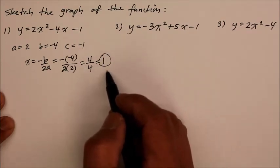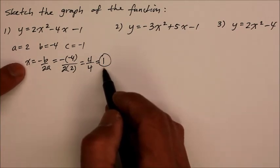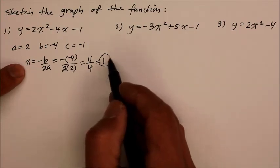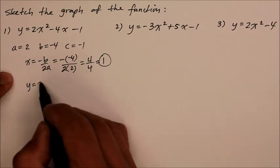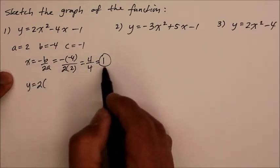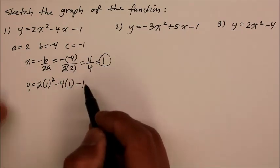Now for the vertex, we need the coordinates for both x and y. We have the x, and where do we get the y? We take that x, which is 1, and substitute it back into the given function. So that's y equals 2x squared, but x is 1 squared, minus 4 times 1, minus 1.